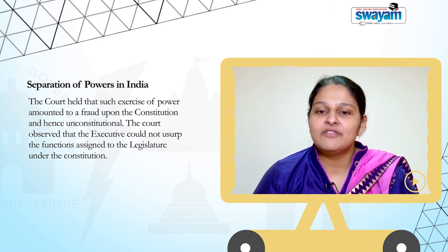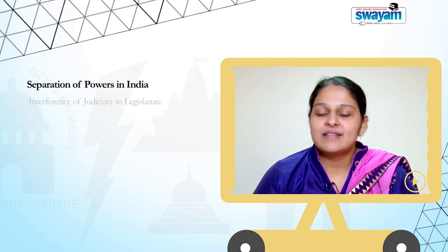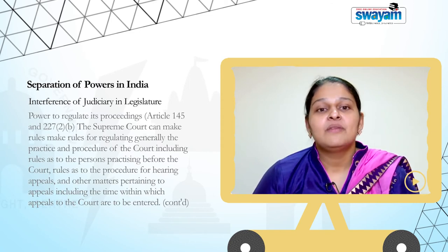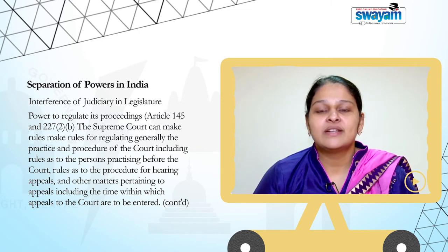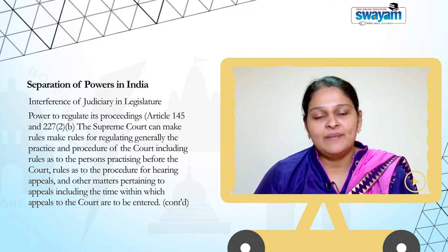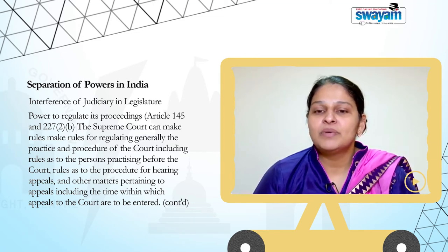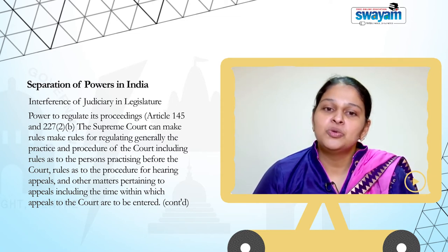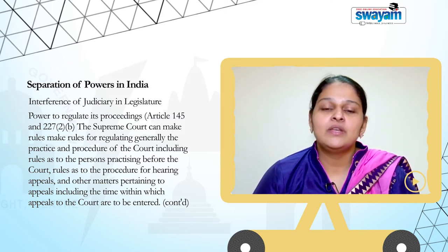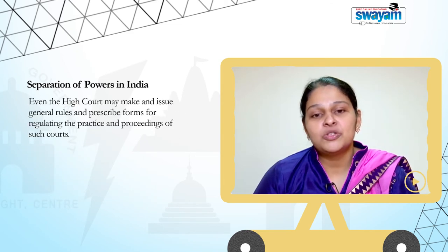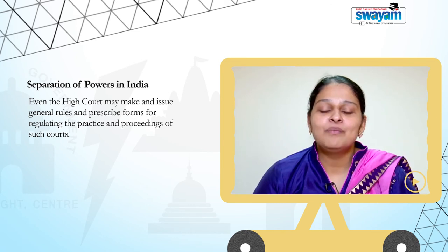The Court observed that the executive could not usurp the functions assigned to the legislature under the Constitution. The last aspect is the interference of judiciary in legislature — power to regulate its proceedings under Article 145 and Article 227 Clause 2. The Supreme Court can make rules for regulating generally the practice and procedure of the Court, including rules as to the persons practising before the Court and rules as to the procedure for hearing appeals, including the time within which appeals to the Court are to be entered. Even the High Court may make and issue general rules and prescribe forms for regulating the practice and proceedings of such Court.